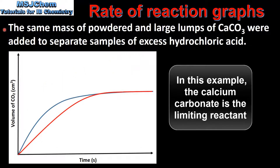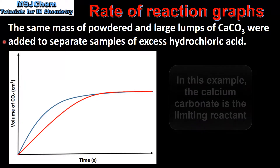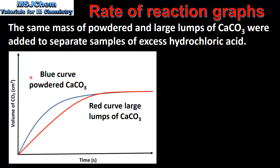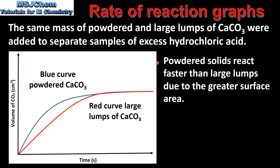In the next example we look at the effect of particle size on the rate of reaction. The same mass of powdered and large lumps of calcium carbonate were added to separate samples of excess HCl. The blue curve has the steeper gradient, meaning a faster initial rate of reaction — it was produced from powdered calcium carbonate — while the red curve was produced from large lumps. The volume of CO₂ produced is the same for both because the same mass of limiting reactant was used. Powdered solids react faster than large lumps due to their greater surface area.